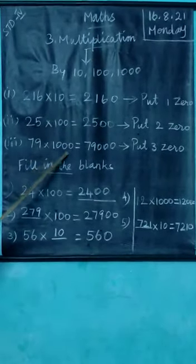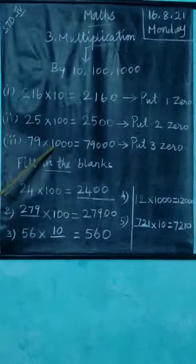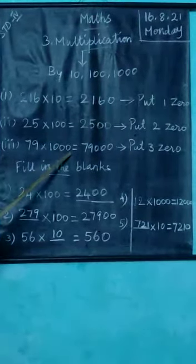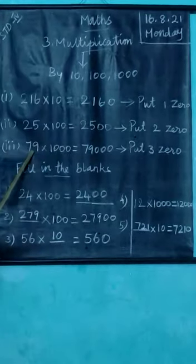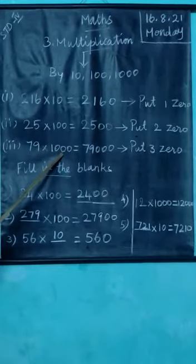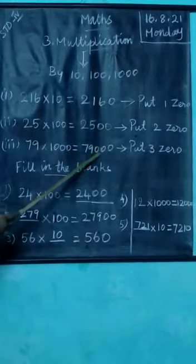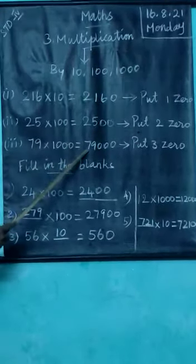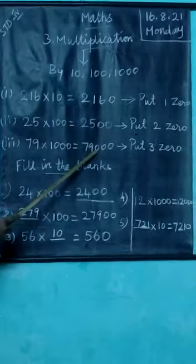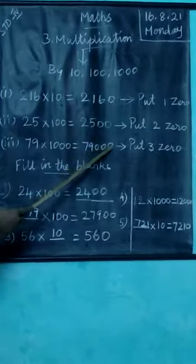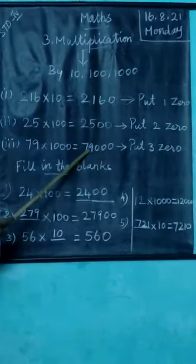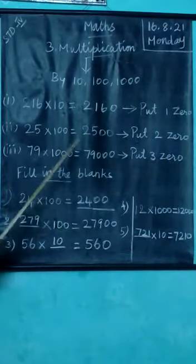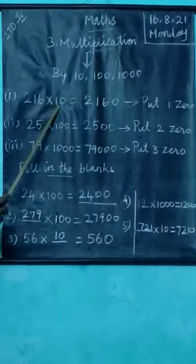Third: 79 into 1000. In 1000, how many zeros are there? Three zeros. So when a number is multiplied by 1000, we put three zeros to the right of the given number. So we write 79 and we put three zeros: 1, 2, 3. So the answer is 79,000. Understand children?